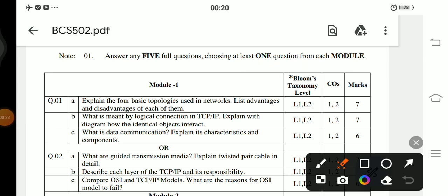The first question is Question 1a: Explain the four basic topologies used in networks. List the advantages and disadvantages of each of them. 1b: What is meant by logical connections in TCP/IP? Explain with a diagram how the identical objects interact. 1c: What is data communication? Explain its characteristics and components.